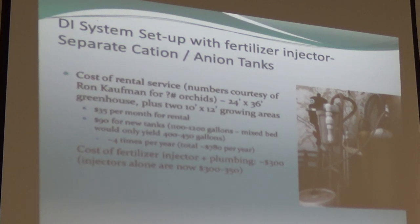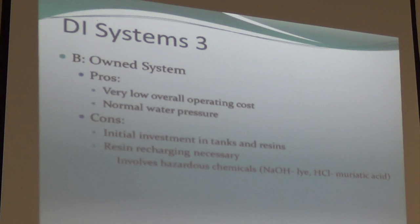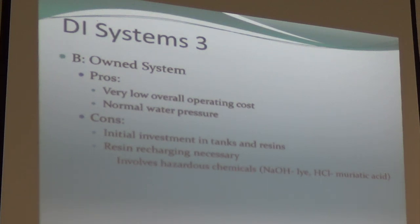A two-tank DI system has water go into both tanks — first into one and then into the other — individually removing negative ions and positive ions, and then you end up with clean water. Ron Kaufman has a fertilizer injector because one of the problems with cleaning out your water is it removes everything, so you have to put the minerals back in. You can also own your tanks outright; costs go down overall, but it involves hazardous chemicals — lyes and acids — to clean the resins.